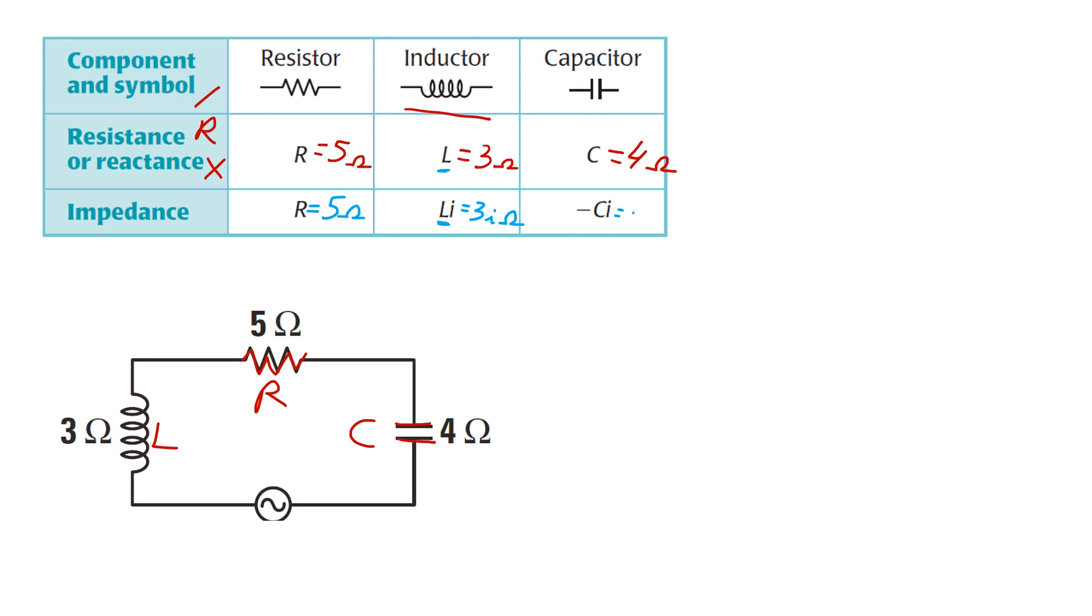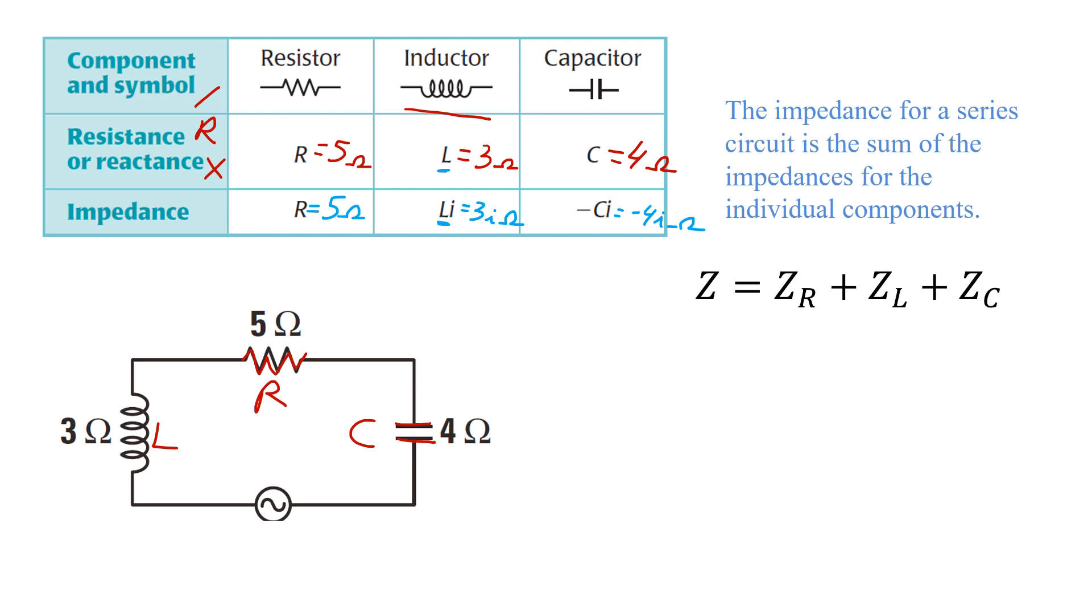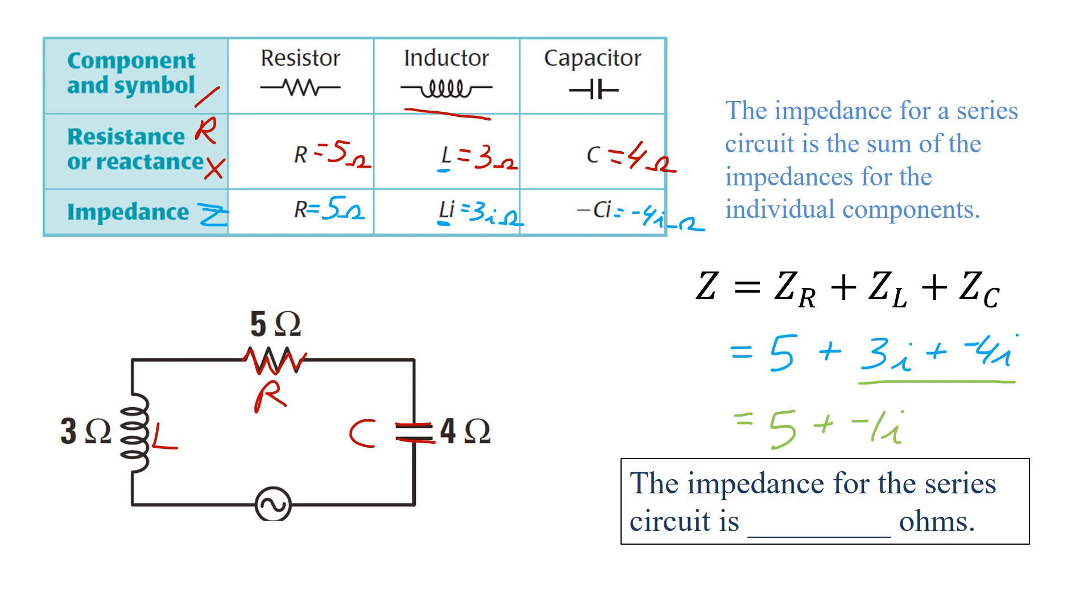And impedance for the capacitor is negative 4i ohms. So based on what we were told before, Z, which is the variable used for impedance, is the sum of all the other impedances. Just match them up now from the information we had before: 5 plus 3i plus negative 4i. We can combine those two and we get 5 plus negative 1i. So therefore the impedance for the series circuit is 5 minus i ohms.